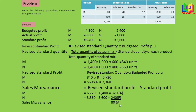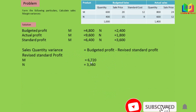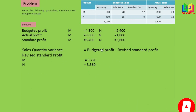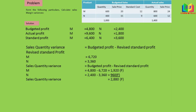Sales quantity variance = budgeted profit minus revised standard profit. Revised standard profit is 6720 for M and 3360 for Y. Budgeted profit is 4800 for M and 2400 for Y. Both results are favorable, so we add them: sales quantity variance is 2880 favorable.